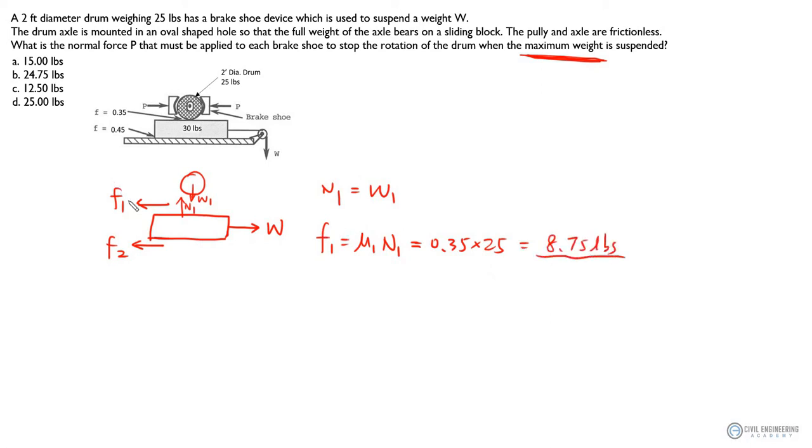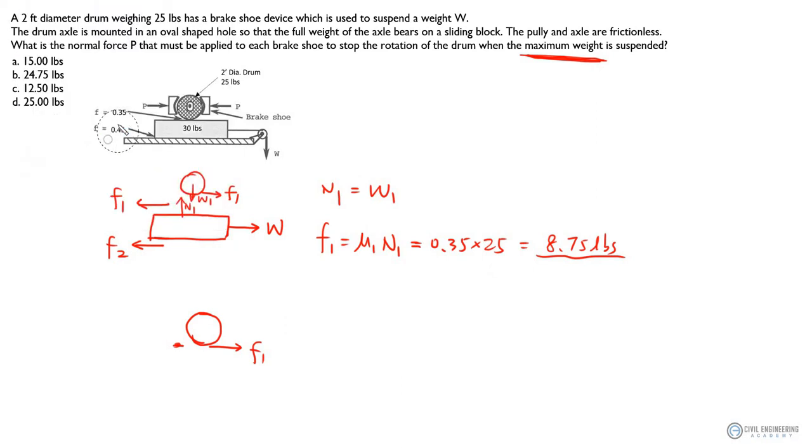So now we know that the friction, the full friction at this interface is 8.75 pounds. So once we know that, we can move on to the free body diagram of this drum. So associated with this normal force P, this is your drum and the friction, the friction should go this way, F1, right? Because if the F1 is pointed this way on the block, the F1 on the drum should point in the opposite direction.